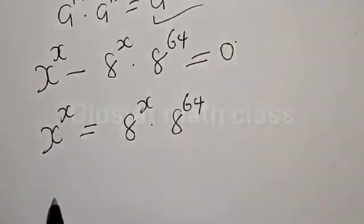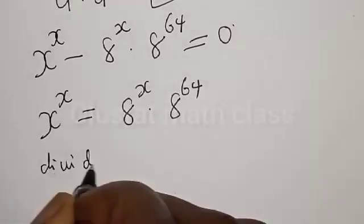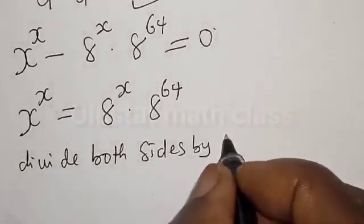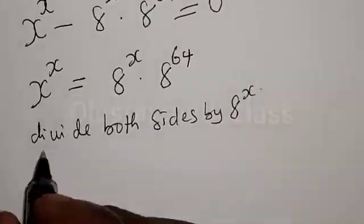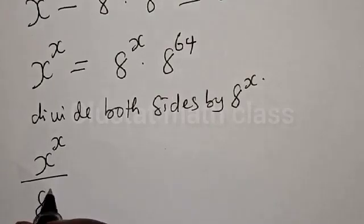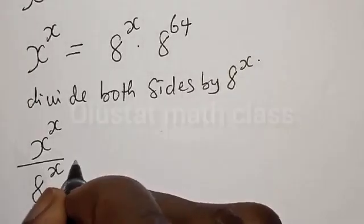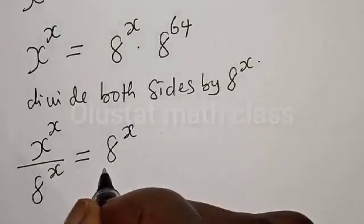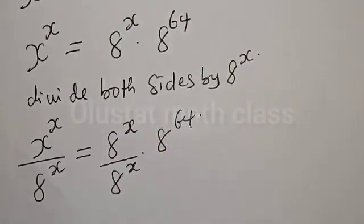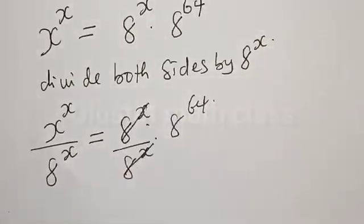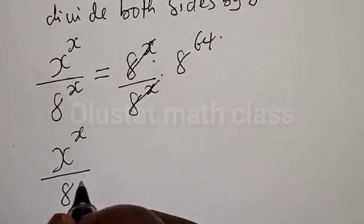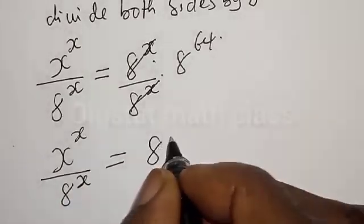Now let's divide both sides by a raised to power s. So s raised to power s divided by a raised to power s is equal to a raised to power s divided by a raised to power s, multiplied by a raised to power 64. This one will cancel this. Now we have s raised to power s divided by a raised to power s is equal to a raised to power 64.